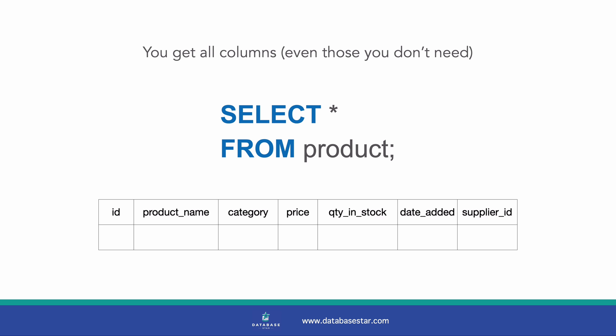The first reason is that you get all columns, even those you don't need. You will probably not need all columns from your table in your results. Sure, sometimes you do need every column, but in most cases you don't. You might be wondering, where's the harm in that? You could just ignore the columns you don't need, but there's a cost with getting more data than you need. The query takes longer to run, and longer to return results. There may be memory impacts in your application if more data is included than what is needed.